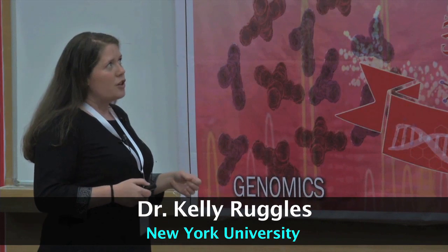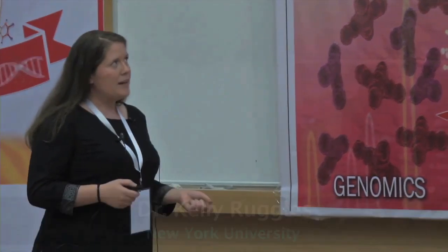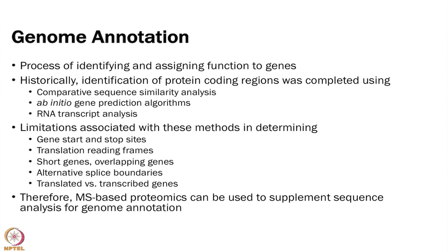The first example I am going to talk about is genome annotation — using sequencing data for genome annotation. This is not cancer-specific, but it is a use that many people may end up using in their work. Genome annotation is the process of identifying and assigning functions to genes. The human genome has been fairly well annotated, as has the mouse genome and Drosophila, but there are tons of organisms out there that have not been annotated.